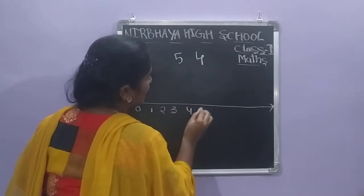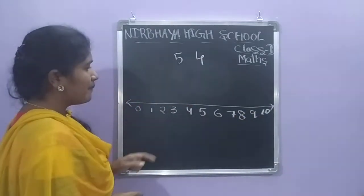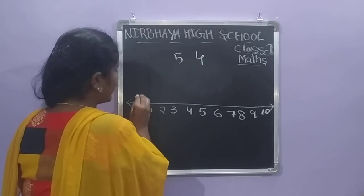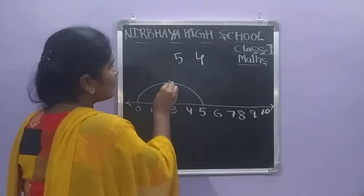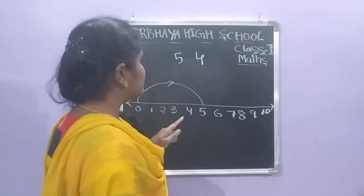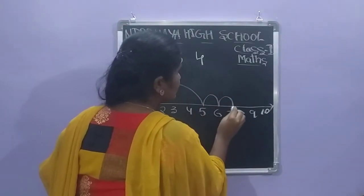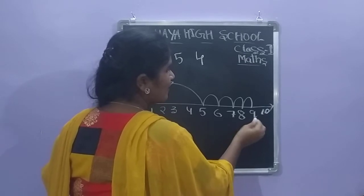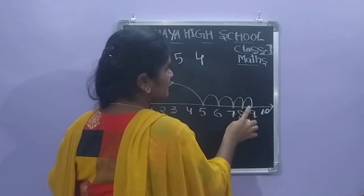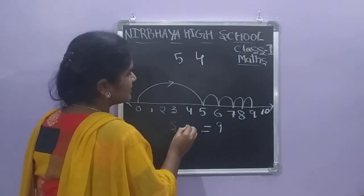We write zero, one, two, three, four, five, six, seven, eight, nine, and ten. Five is the first number, so we draw from zero to five. Four is the second number, so we move four steps from five — one, two, three, four — and we stop at nine. So five plus four equals nine.